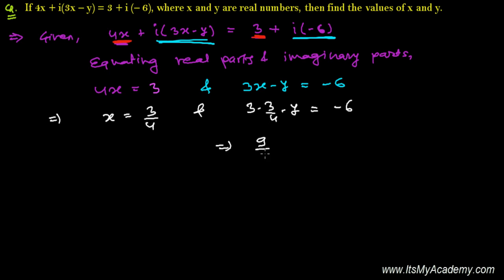It's minus y, so I'm writing this minus y to the other side, so it becomes plus y, and this minus 6 comes to this side, so it's 6. So y is going to be 4 times 6, that is 24, plus 9 divided by 4. 24 plus 9 is 33, so it is 33 over 4.